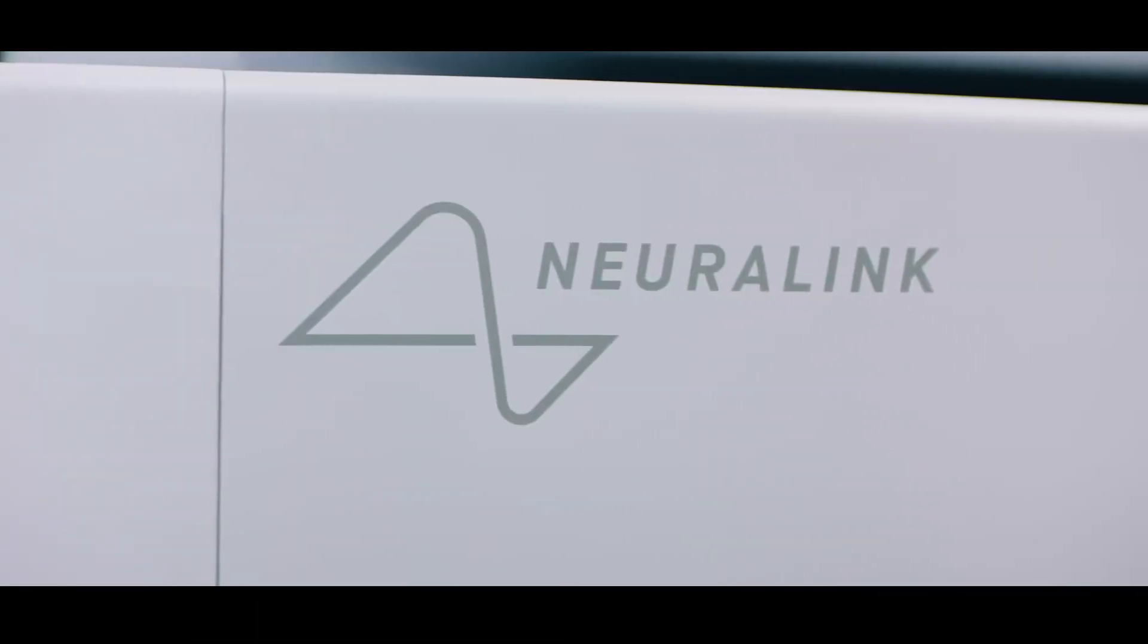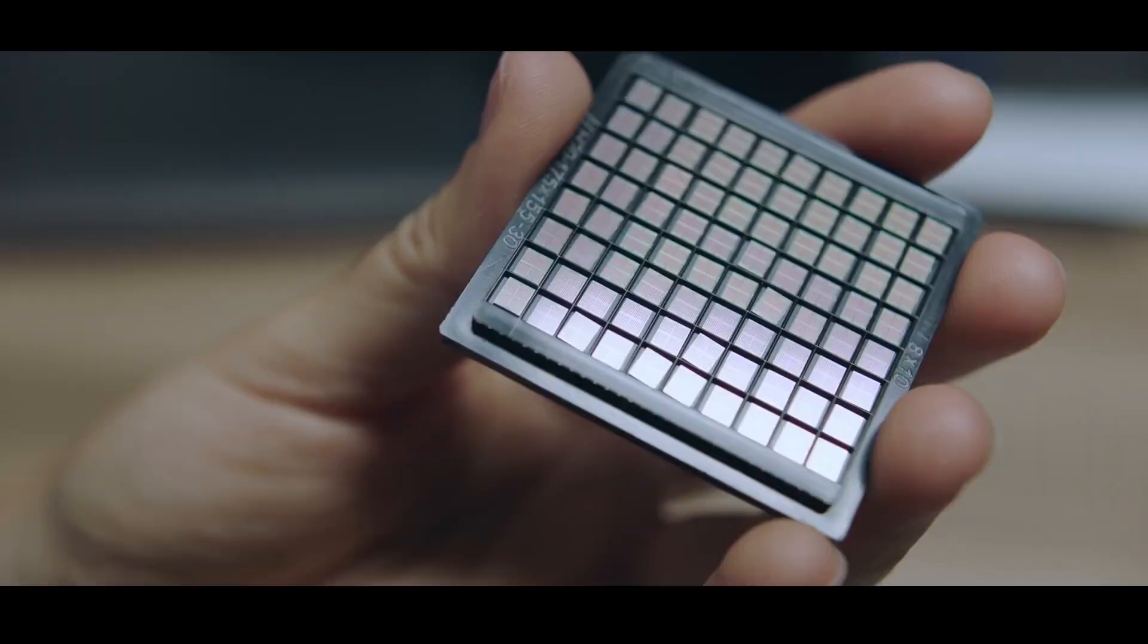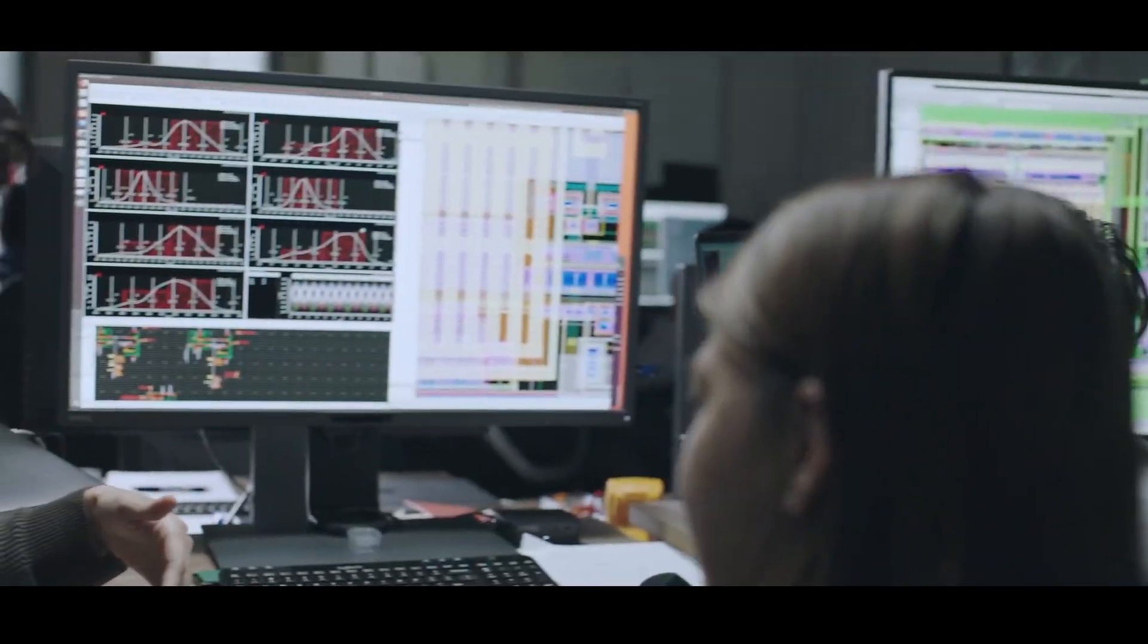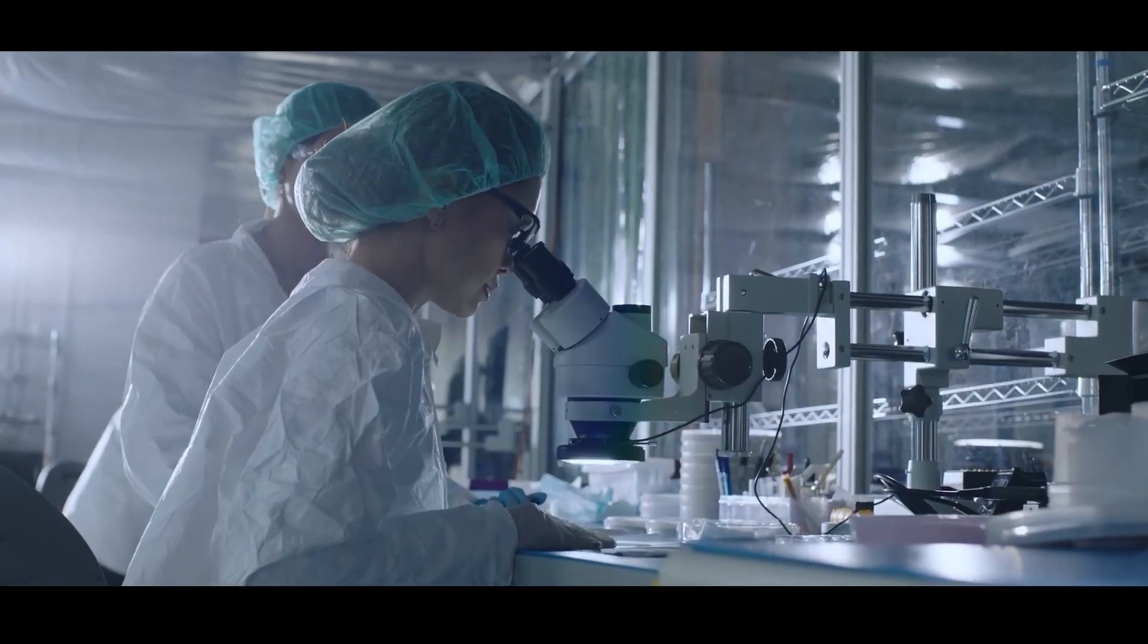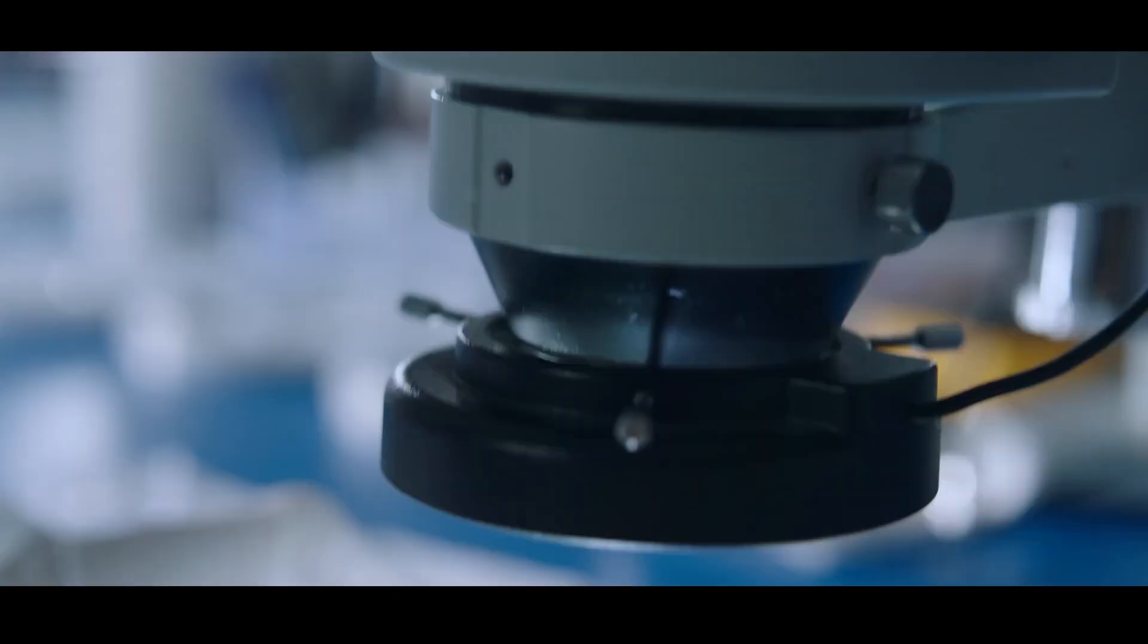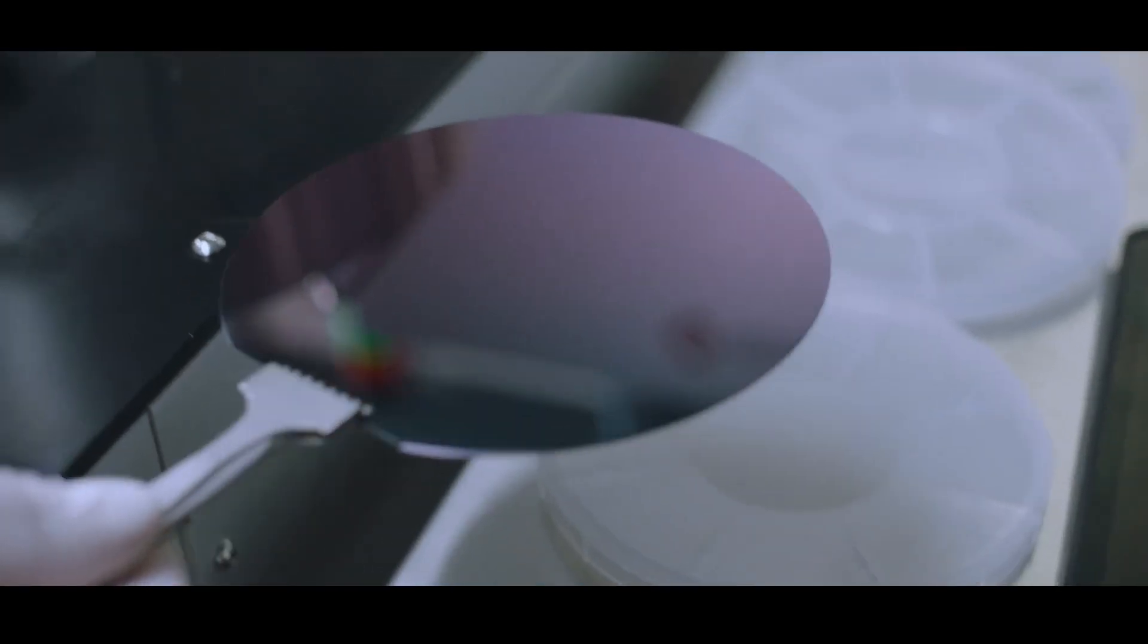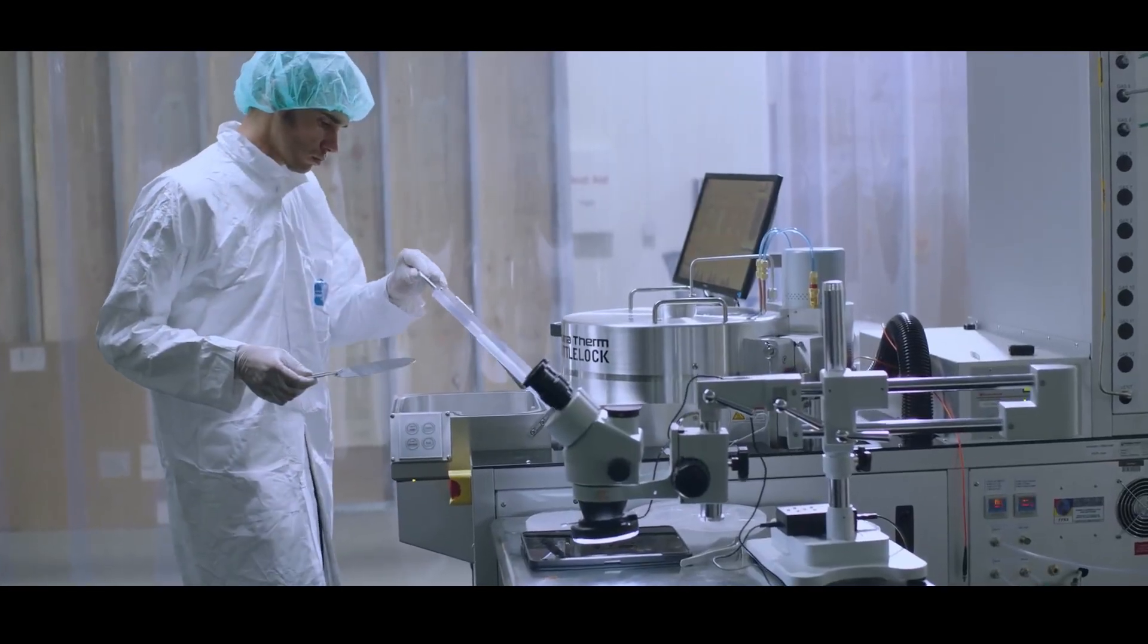Since Neuralink started the microfabrication process in 2021, the time it takes to make a new design of electrode threads has been cut in half. This means that they can iterate to a new design in just a few days. Neuralink has its own method for producing the needles that insert electrodes into the cortex, carrying the vertical integration theme further. They do this using laser milling, which is similar to a CNC mill but has sub-micron accuracy.